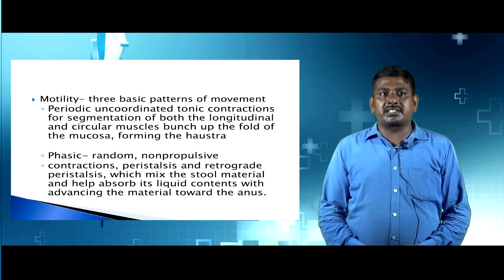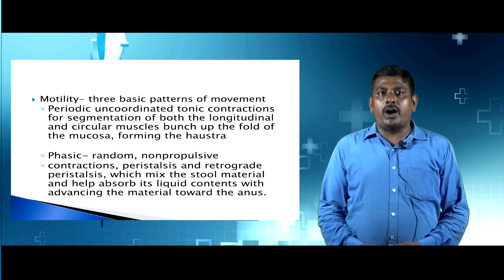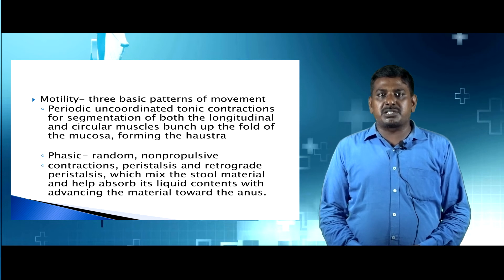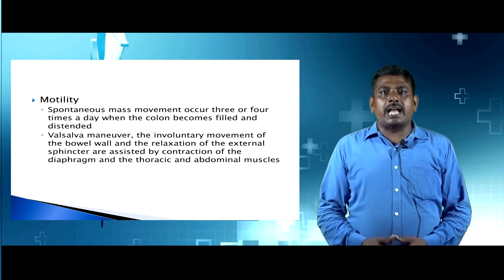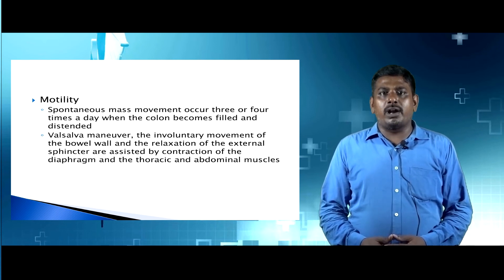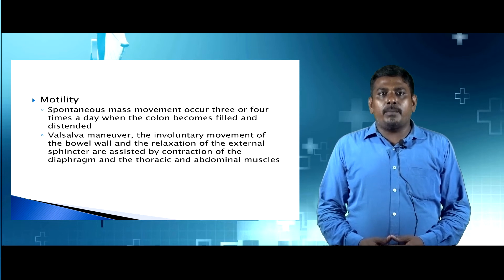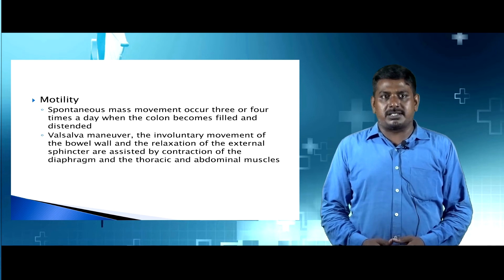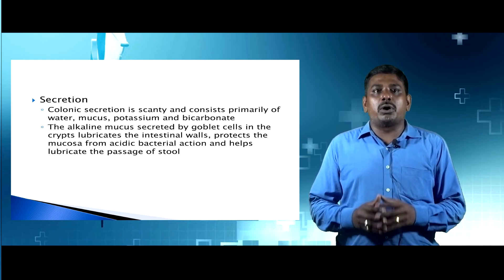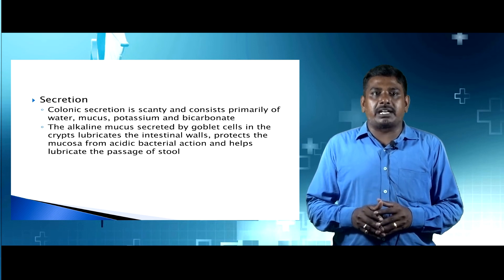Regarding motility of the colon, there are three basic movement patterns. The first is periodic, uncoordinated contractions causing segmentation of both the longitudinal and circular muscle, which bunch up folds of the mucosa forming the haustra. The second is basic random non-propulsive contractions. The third is peristalsis and retrograde peristalsis, which mix stool material and help absorb liquid contents while advancing material towards the anus. Spontaneous mass movements occur three or four times a day when the colon becomes filled and distended. The Valsalva maneuver — involving involuntary movement of the bowel wall and relaxation of the external sphincter — is assisted by contraction of the diaphragm and thoracic and abdominal muscles.